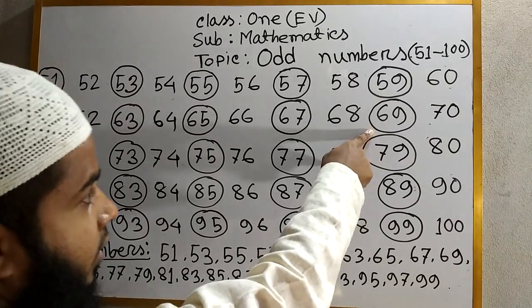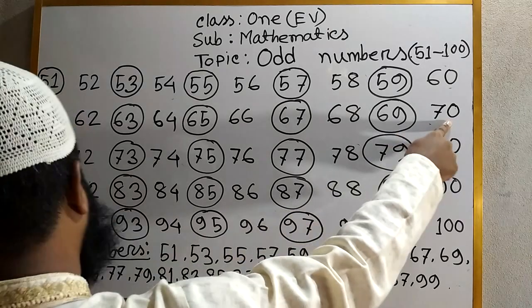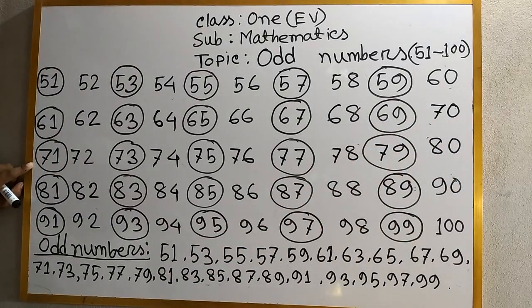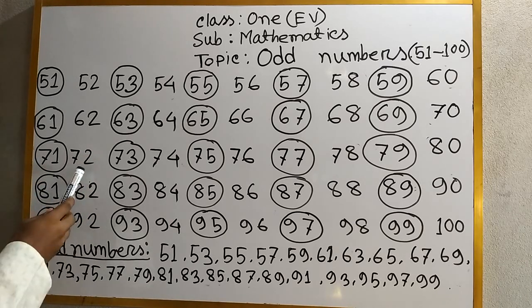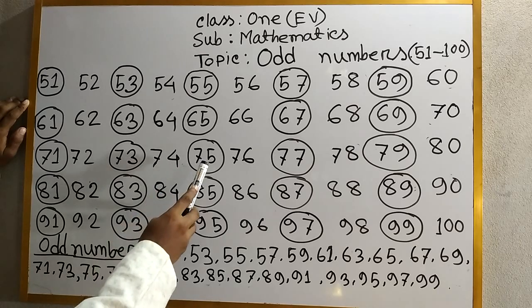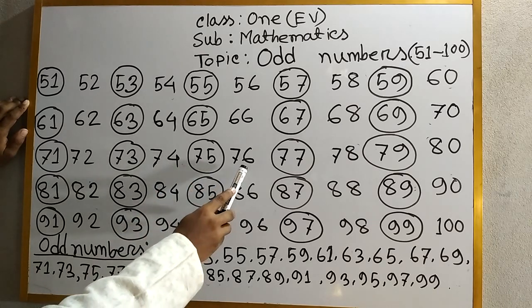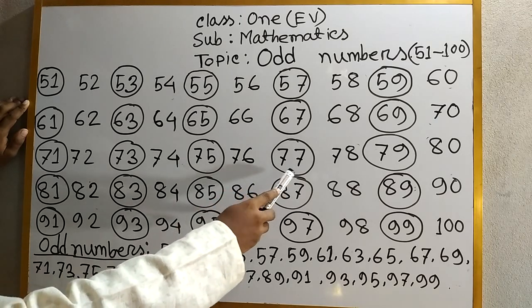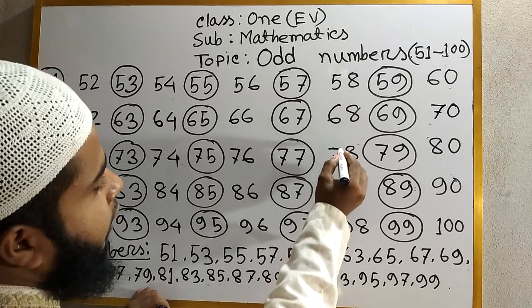68. 69 odd number. 70. 71 odd number. 72. 73 odd number. 74. 75 odd number. 76. 77 odd number. 78. 79 odd number.